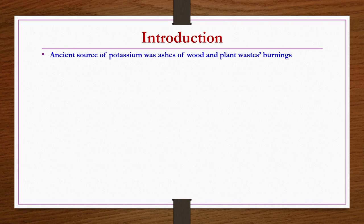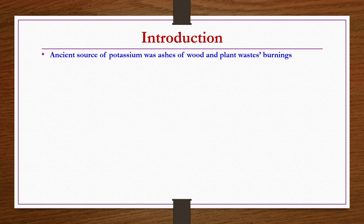What are the sources of potassium? As we have already seen at the beginning of the fertilizers lecture, we do not have indigenous sources for potassium and phosphorus. The ancient sources of potassium were ashes of wood and plant waste burnings — agricultural field waste after collecting crops was burnt and the ashes served as a source of potassium. Forestry waste when burnt also yields ashes containing adequate amounts of potassium.